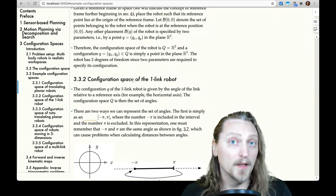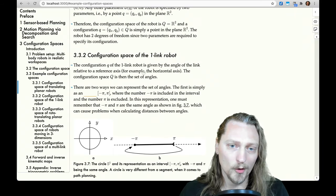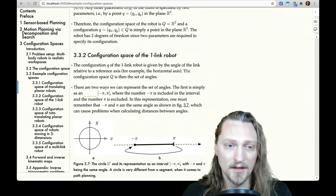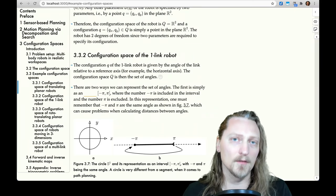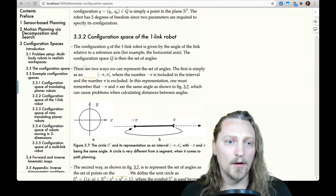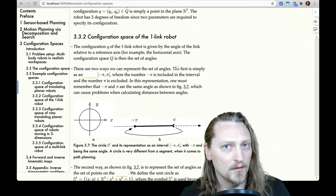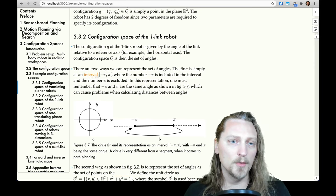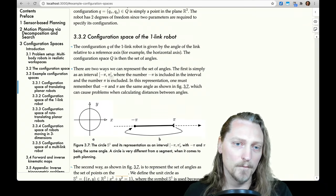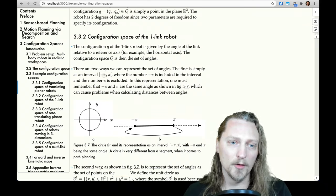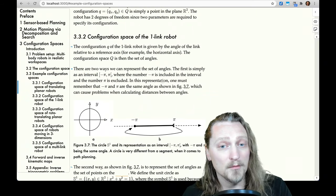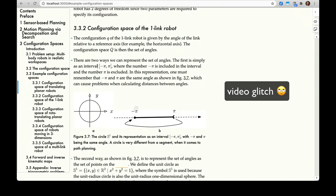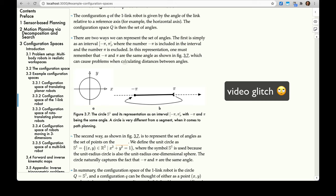Configuration space of the one link robot. The configuration Q of the one link robot is given by the angle of the link relative to a reference axis, for example, the horizontal axis. The configuration space Q is then the set of all angles. There are two ways we can represent the set of angles. The first is simply as an interval where we include negative pi and we exclude the other endpoint pi. In this representation, one must remember that negative pi and pi are the same angle, as shown in figure 3.7, which can cause problems when calculating distances between angles.